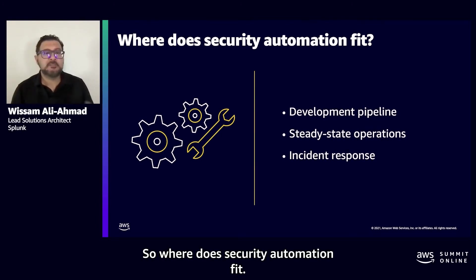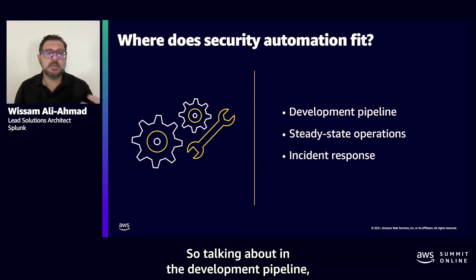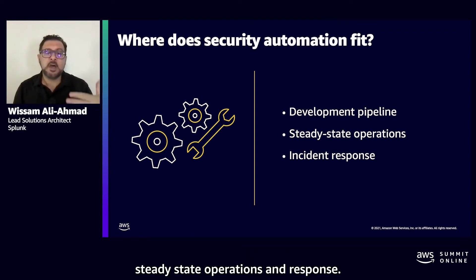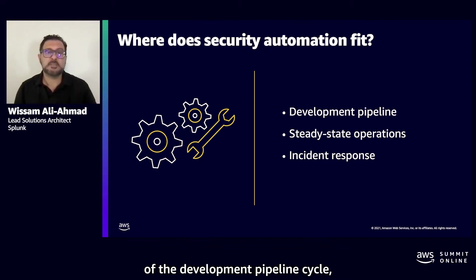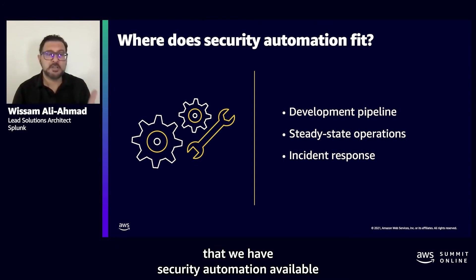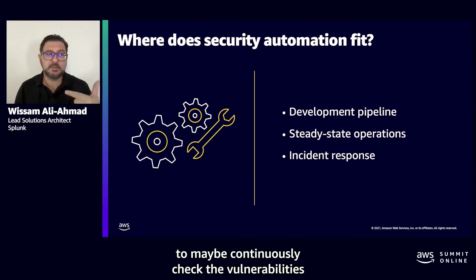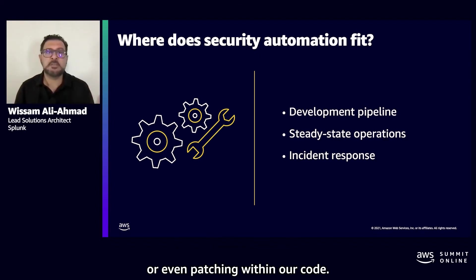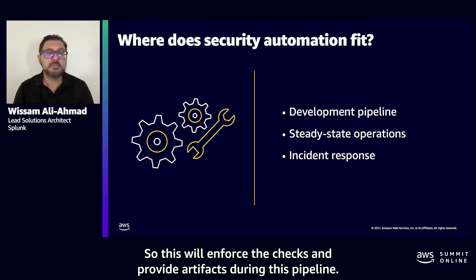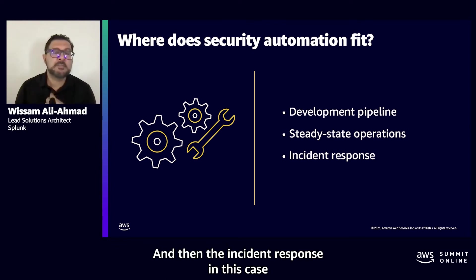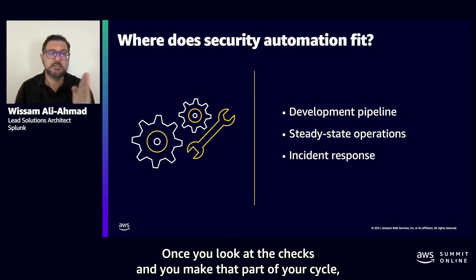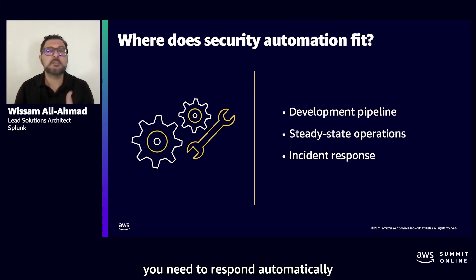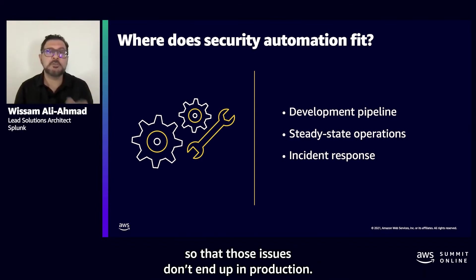Where does security automation fit? Talking about the development pipeline, the steady-state operations, and response — that's where we want to make sure we have security automation as part of the development pipeline cycle, to continuously check for vulnerabilities or even patching within our code. This will enforce checks and provide artifacts during the pipeline. The instance response is a very important aspect — once you look at the checks and make that part of your cycle, you need to respond automatically so that those issues don't end up in production.